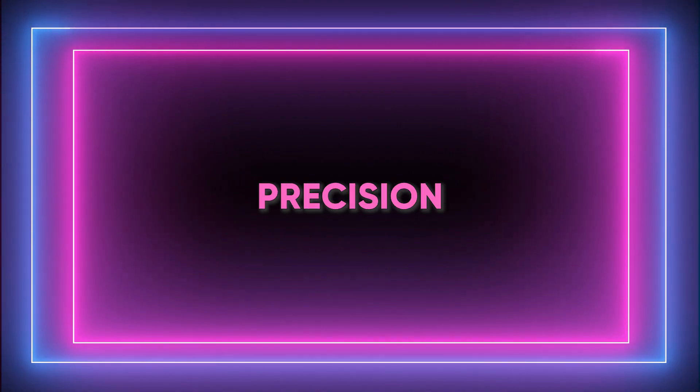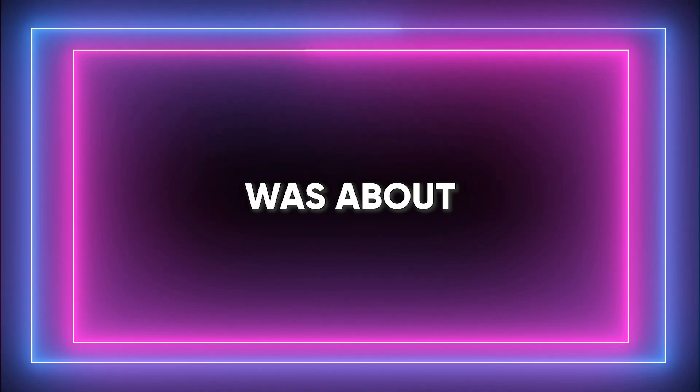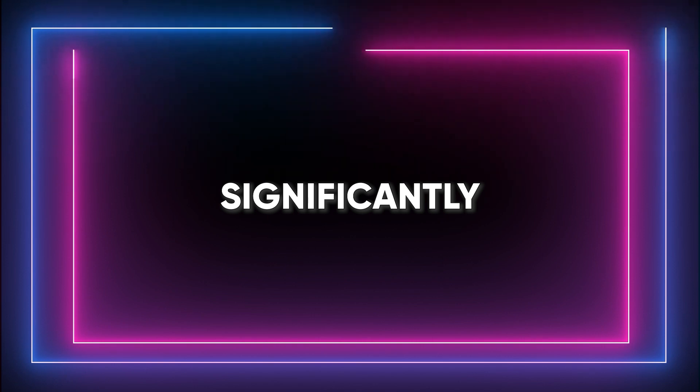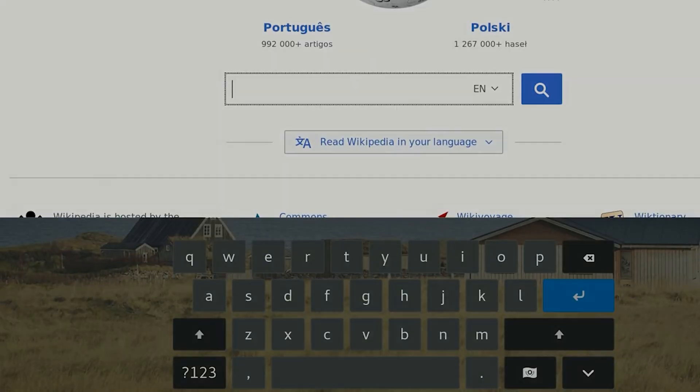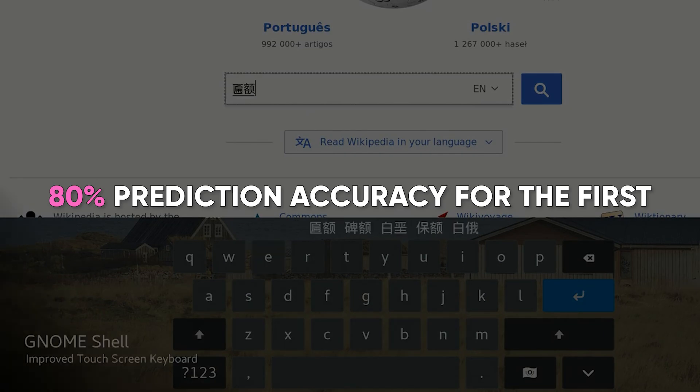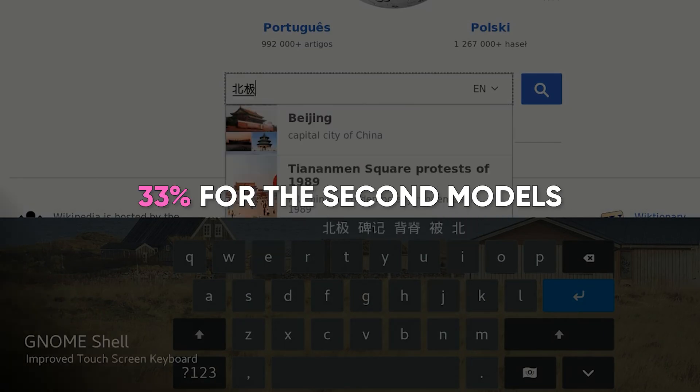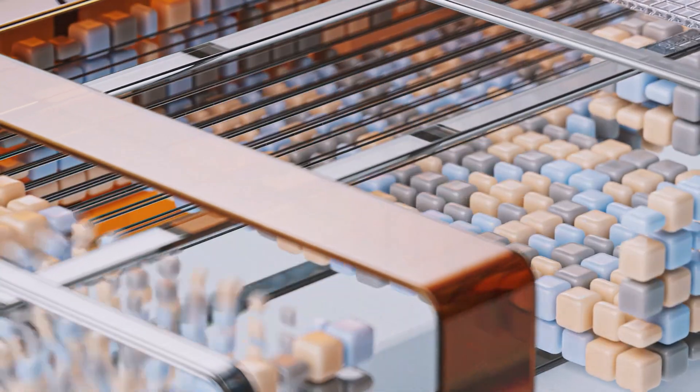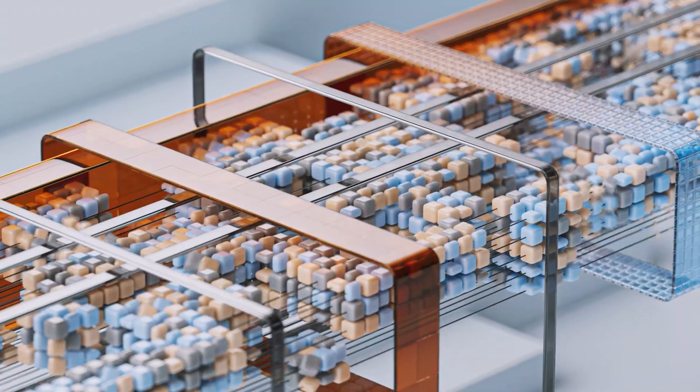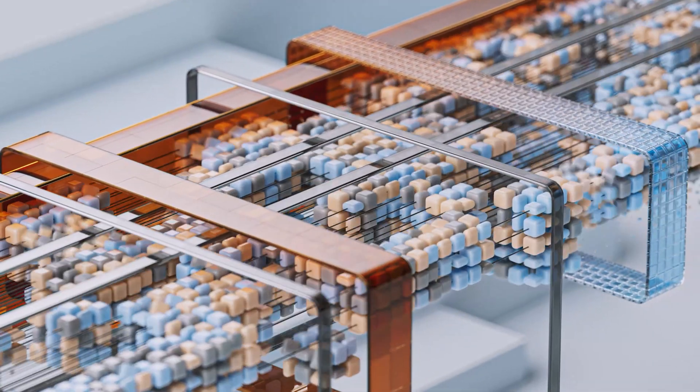Initially, GNOME's precision in predicting material stability was about 5%, but this accuracy improved significantly with each iteration. Ultimately, GNOME achieved over 80% prediction accuracy for the first and 33% for the second models. Understanding GNOME's underlying technology helps us appreciate what it does and how it achieves its remarkable feats.